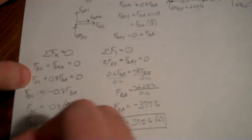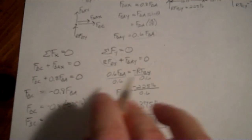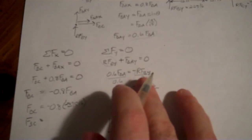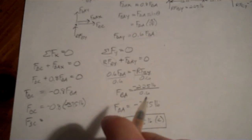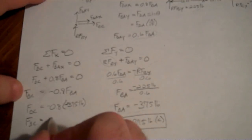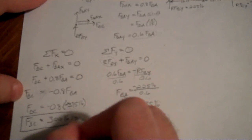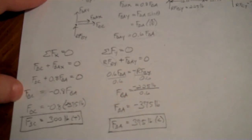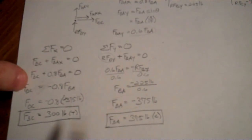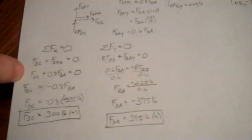So FBC is equal to 0.8 times 375, 300 pounds. Now the fact that this came out positive means we were correct in our original direction, assuming this was in tension. So we have FBC, we have FBA, and the next part we're going to do one more joint so that we can get FAC.